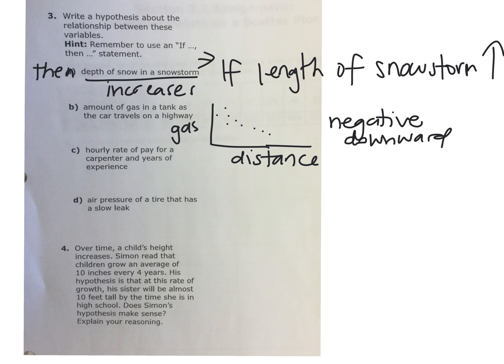So hourly rate of pay for a carpenter and years of experience. As the more experience you have, so as your experience increases, they would probably get paid higher. So the graph would be upward or downward? Upward. Upward. As years of experience increase, your pay increases.